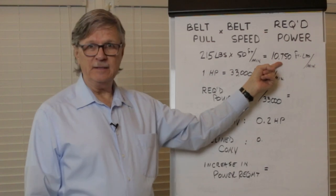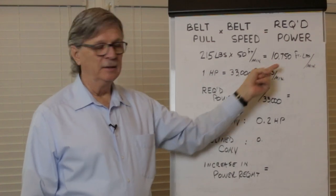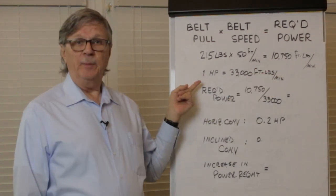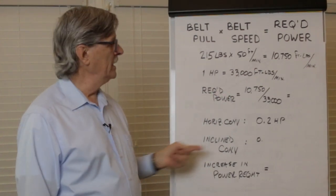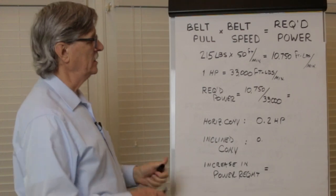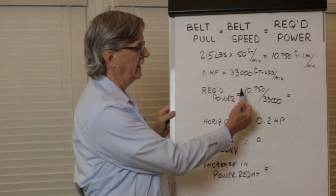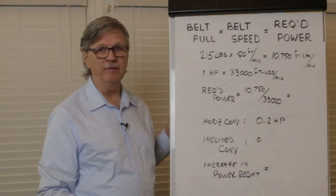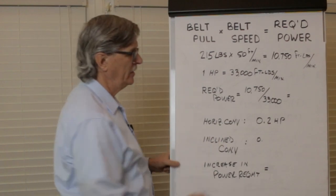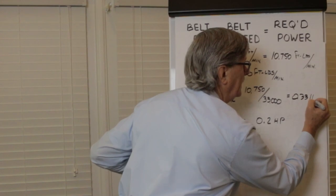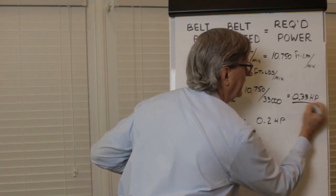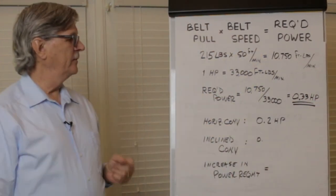Now we need to convert this to a useful unit of measure. We know in imperial units that one horsepower equals 33,000 foot pounds per minute. To convert this to a useful unit of measure, we simply divide 10,750 foot-pounds per minute by 33,000 and we come up with a power requirement of 0.33 horsepower.